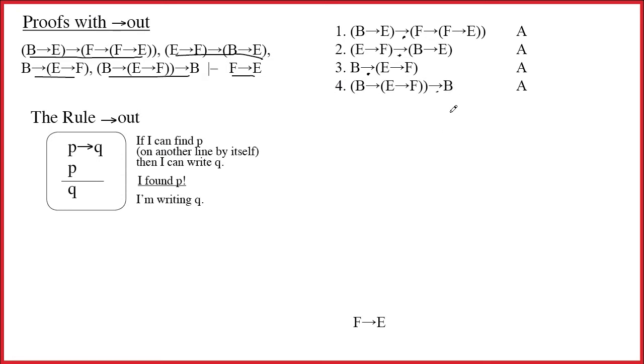Now, the value of knowing the main connective is it typically tells you what rule to use. Well, right now we've only got one rule. But every time that the arrow is the main connective, all semester long, you'll want to be thinking about the rule arrow out. But moreover, if you know the main connective, then you know how to think about the line in terms of P and Q. Everything that's in front of the arrow is P. Everything after it is Q.